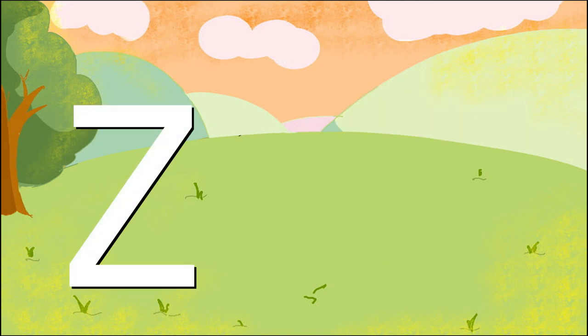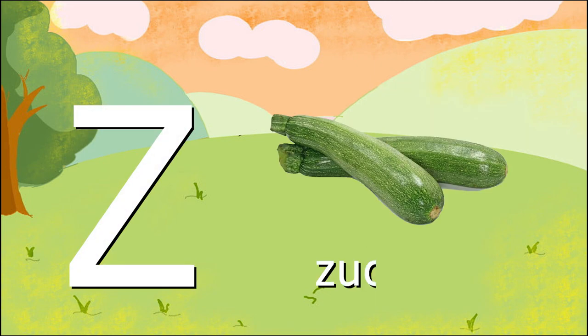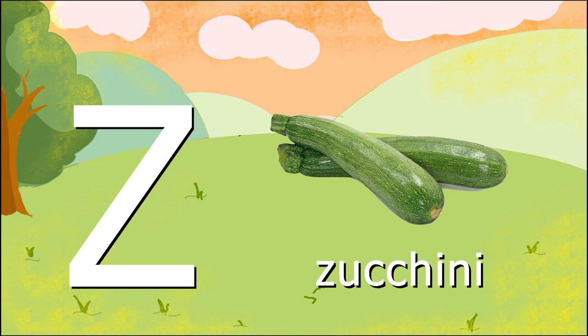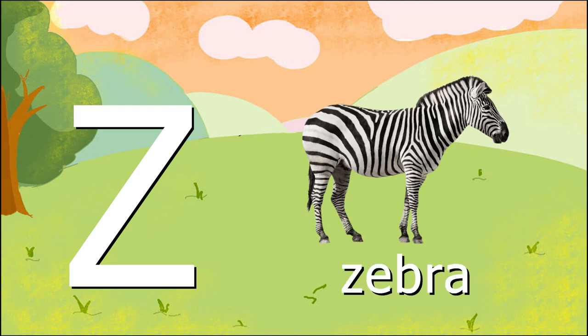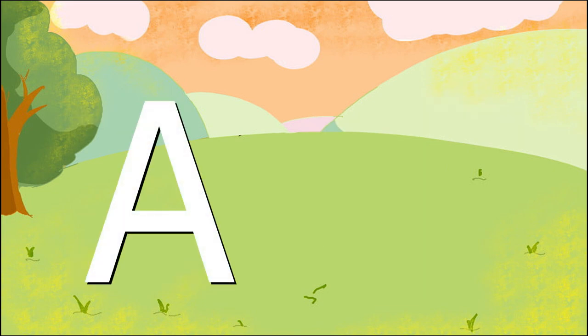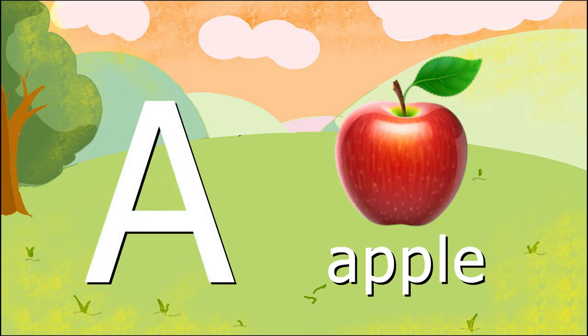Z for zucchini. Z, z, zucchini. Z for zebra. Z, z, zebra. It is so much fun learning the alphabet! Let us do it again.